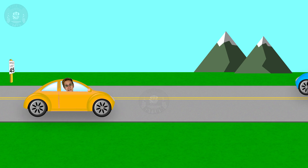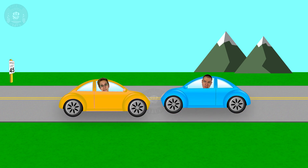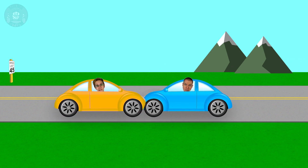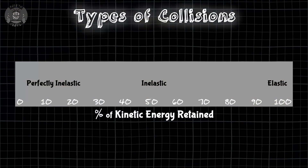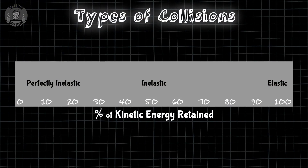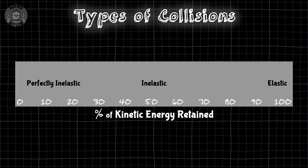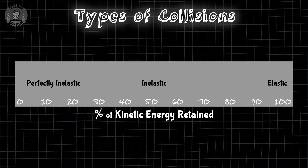But momentum isn't really relevant unless there are at least two objects. It only matters for these cars if they run into each other — that's something you might call a collision for obvious reasons. We even categorize them based on how much kinetic energy is retained during the collision. Unfortunately, this gives students all sorts of wrong impressions.